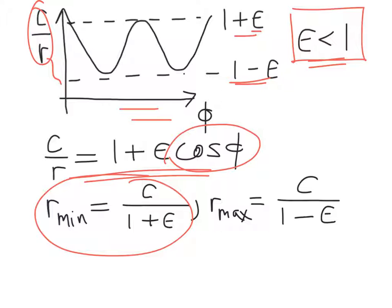And then when cosine of phi is at its minimum, that's when the denominator becomes a minimum, 1 minus epsilon. And so you take on r max. It's the maximum radial distance between the two masses.